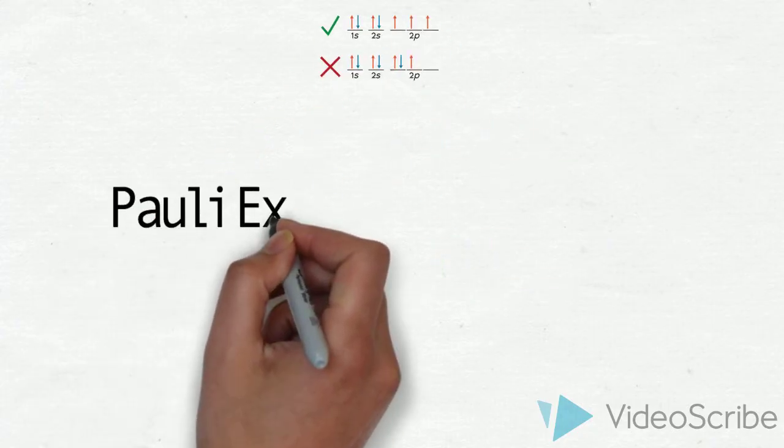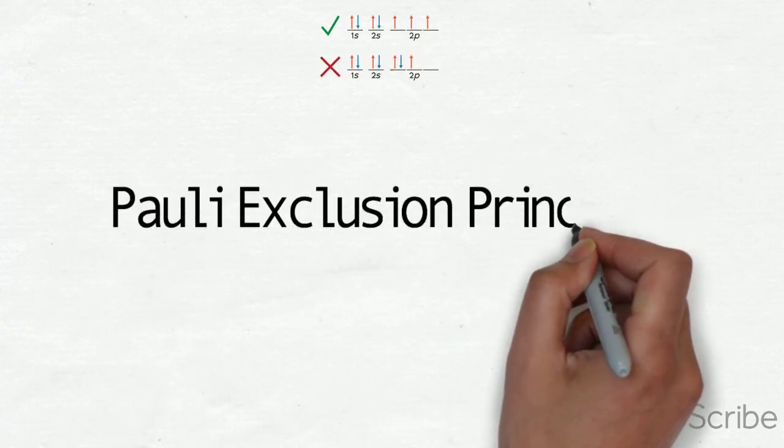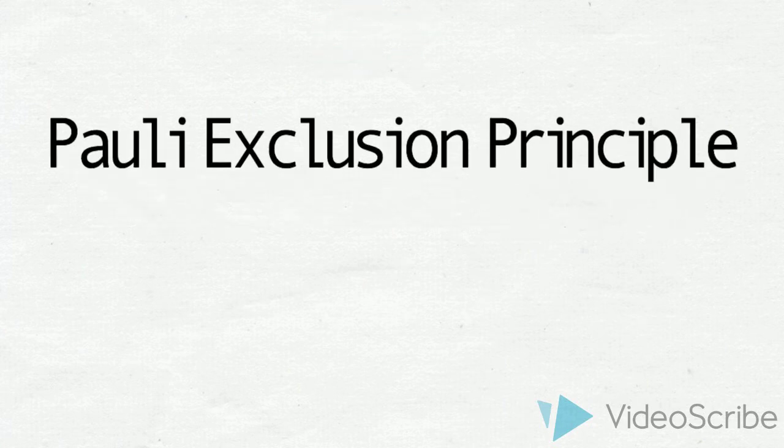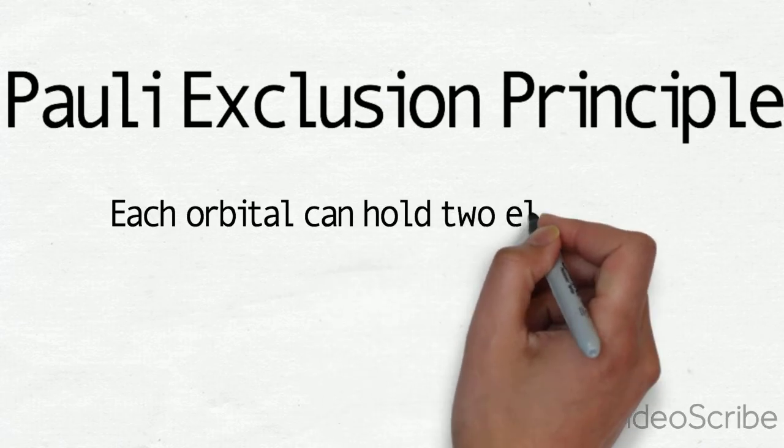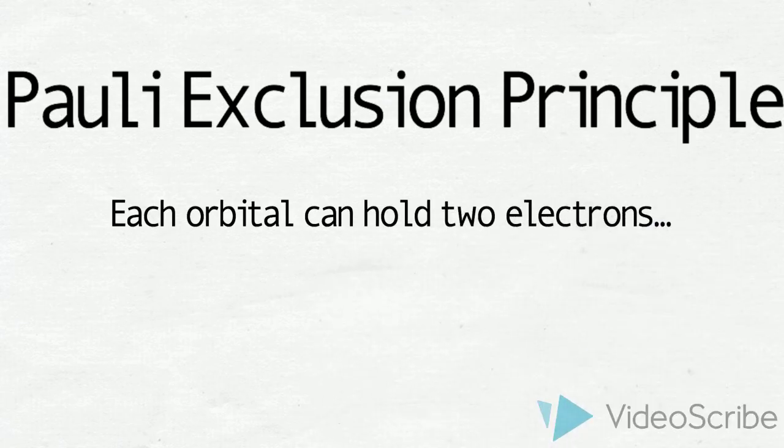Pauli Exclusion Principle. Each orbital can hold two electrons with opposite spins, meaning they face opposite directions. Spins can face up or down.